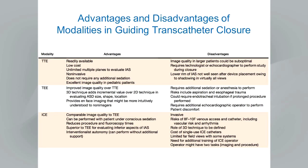Transthoracic echo is readily available, inexpensive, very non-invasive, requires no additional sedation, and offers excellent image quality in many patients with nearly unlimited planes. In pediatrics it has a central role in both diagnosis and guiding procedures. Disadvantages include suboptimal images in larger adult patients, the need for a technologist or echocardiographer during transcatheter closure procedures, and poor visualization of the lower rim of the intra-atrial septum after device placement due to shadowing.